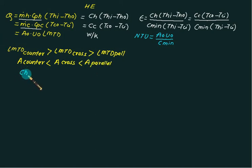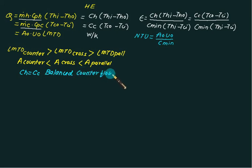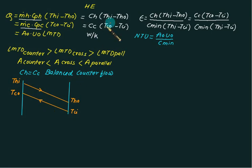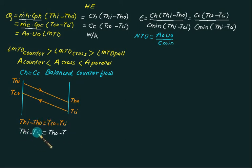But if we have C_H equal to C_C, it is a special case. We call it a balanced counter flow heat exchanger. If we have a balanced counter flow heat exchanger, our temperature distribution will be exactly a straight line: T_HI, T_CO, T_HO, T_CI. This is the case where C_H equals C_C and (T_HI - T_HO) is the same as (T_CO - T_CI).